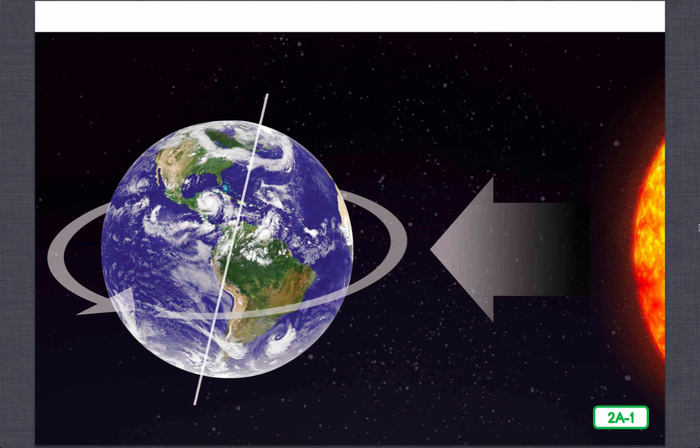It takes 24 hours, or one whole day and one whole night, for Earth to rotate once on its axis. Daytime happens when the part of Earth you live on faces the sun. Nighttime happens when the part of Earth you live on faces away from the sun.